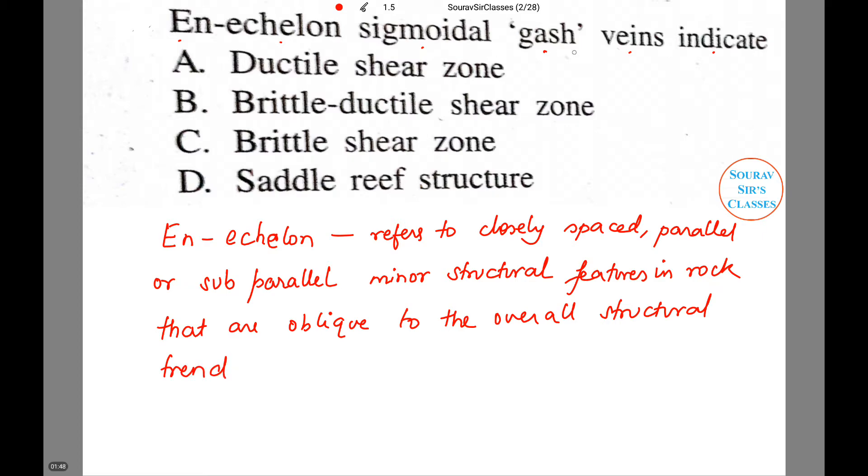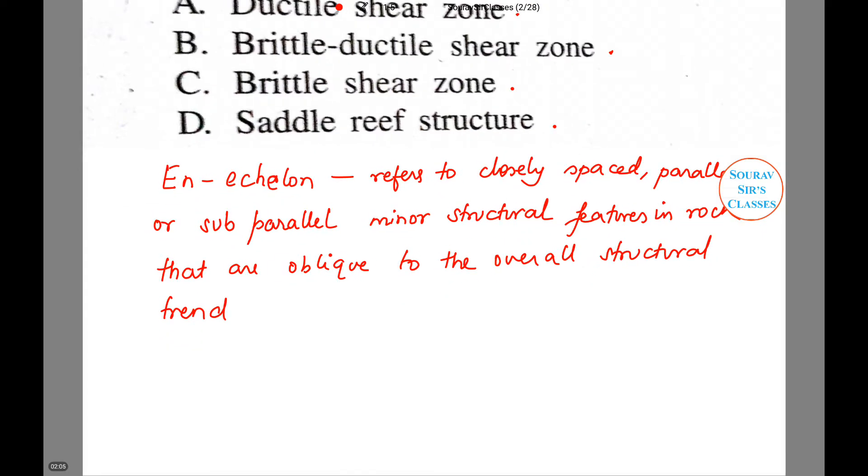Now this particular gash veins indicate. Now let us move on to the question. The different options are ductile shear zone, brittle ductile shear zone, brittle shear zone or saddle reef structure. Now let me provide you with some information and based on the information provided in the tutorial we will look for the correct option.